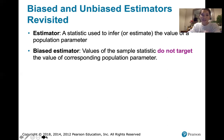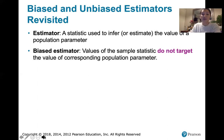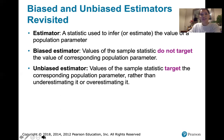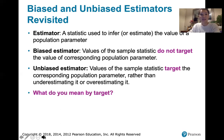We say that the statistic from the sample is biased if the values of the sample statistic do not target the value of the corresponding population parameter. And then we said that the estimator was unbiased if the values of the sample statistic do target that corresponding population parameter, rather than underestimating it or overestimating it.